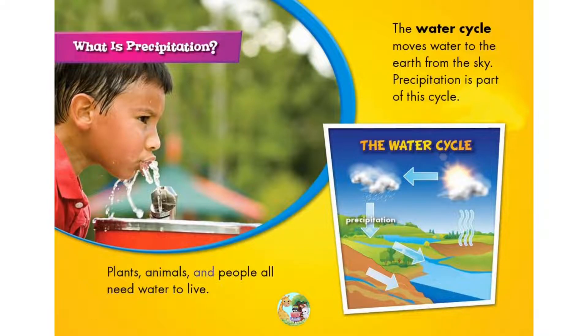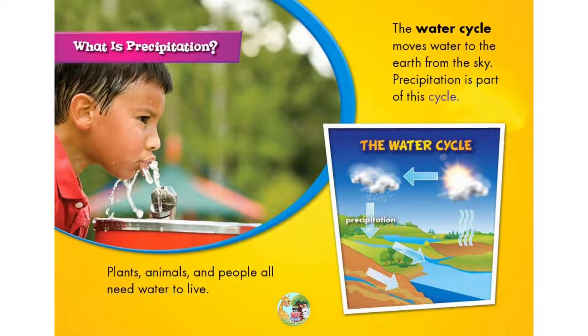Plants, animals, and people all need water to live. The water cycle moves water to the earth from the sky. Precipitation is part of this cycle.